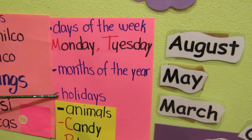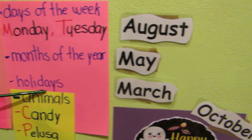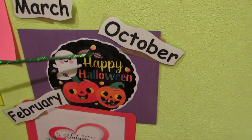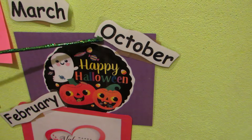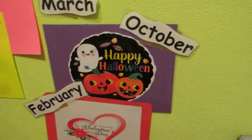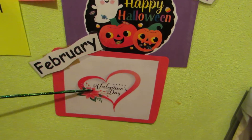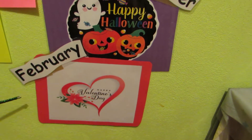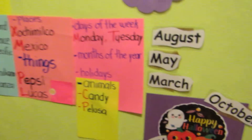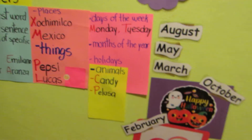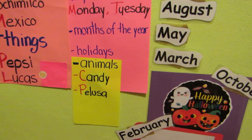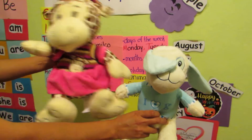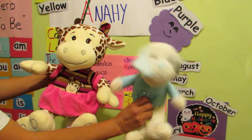Also, holidays, for example, Halloween is in October, or Valentine's Day is in February. Animals — for example, the name of your pet. For example, this is Candy, and this is Pelusa.